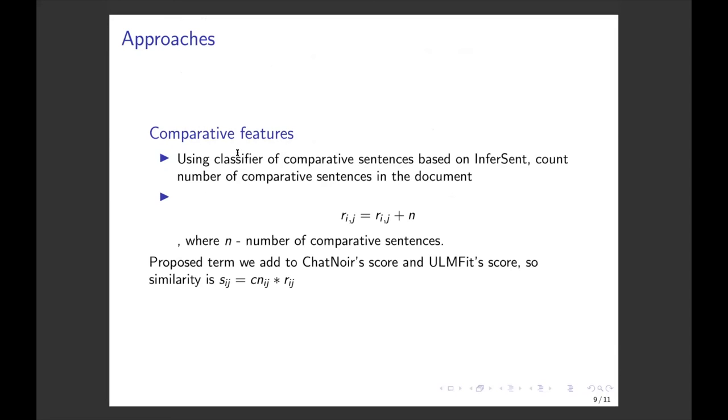On the next step, we estimate the density of comparative sentences in the document. We have a classifier of comparative sentences based on BERT. For every sentence in the retrieved document, we specify if this sentence is comparative or not, and count the number of comparative sentences, and increase the R term by this number. For every topic and document, we have an R term, an additive term for multiplication. We count ChatNoir score baseline and ULMFiT score, and multiply the score by the R term.